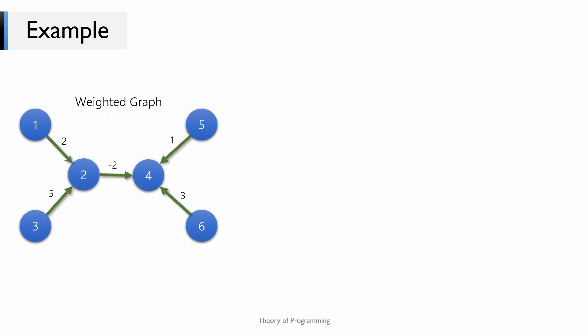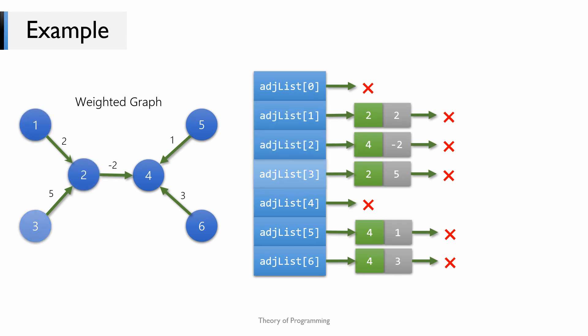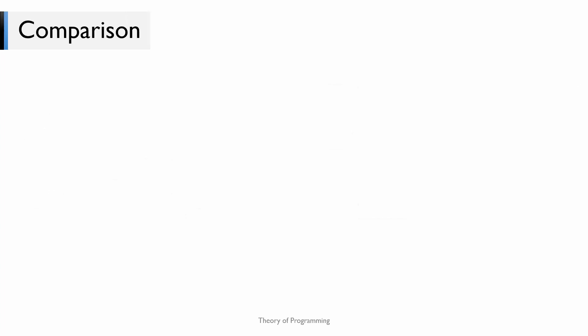Let us look at another example of an adjacency list — this time a weighted graph. The concept of having a linked list for each vertex and a node for each edge remains the same. The only change is that our linked list node stores an extra integer which is the weight of the edge. So for the edge vertex 2 → vertex 4, in the linked list associated with vertex 2 we would have a node with integer 4 (denoting adjacency) and another integer -2 denoting that the weight of the edge is -2.